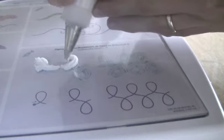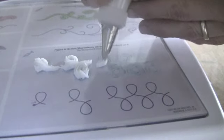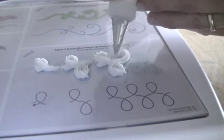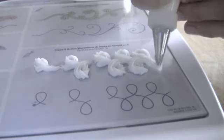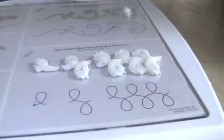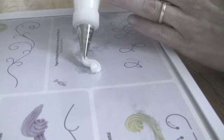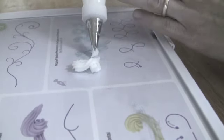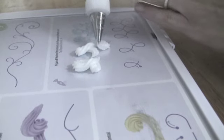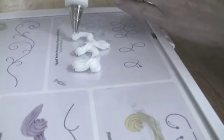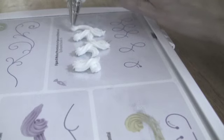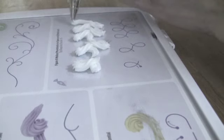To make the figure 8 motion scrolls, we're also going to be using a tip number 16 and holding the bag at a 45 degree angle to the surface. This is kind of like doing the e-motion scrolls, only you're going to be doing one that's right side up, and then right after that you're going to be doing one that's upside down. And then to do it as a border or a continuous figure 8 motion scroll, you want to just keep moving your tip.